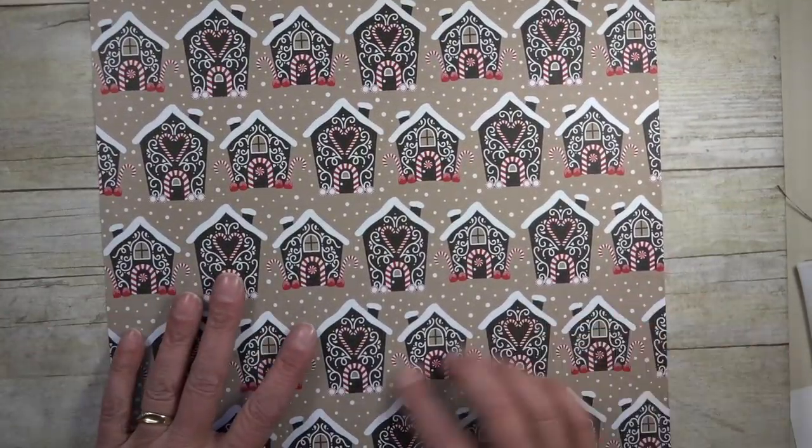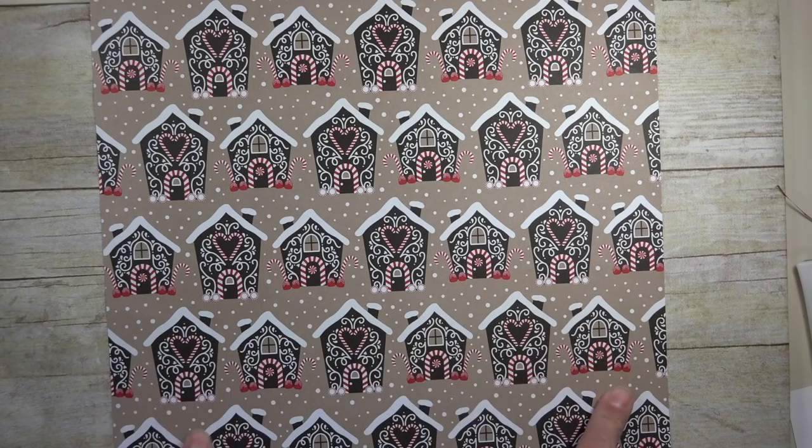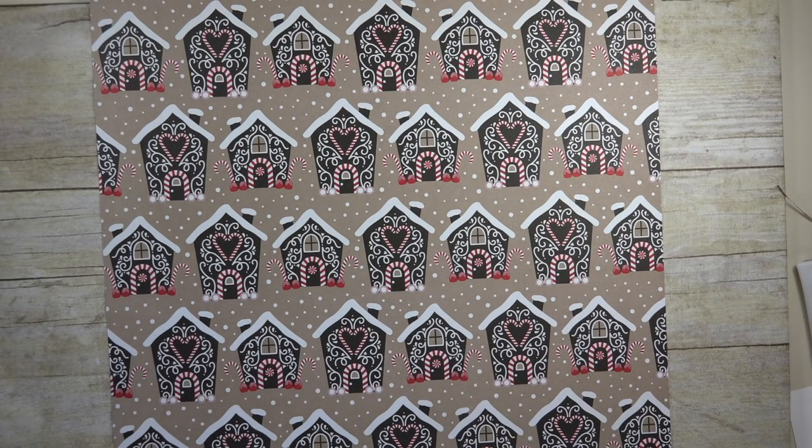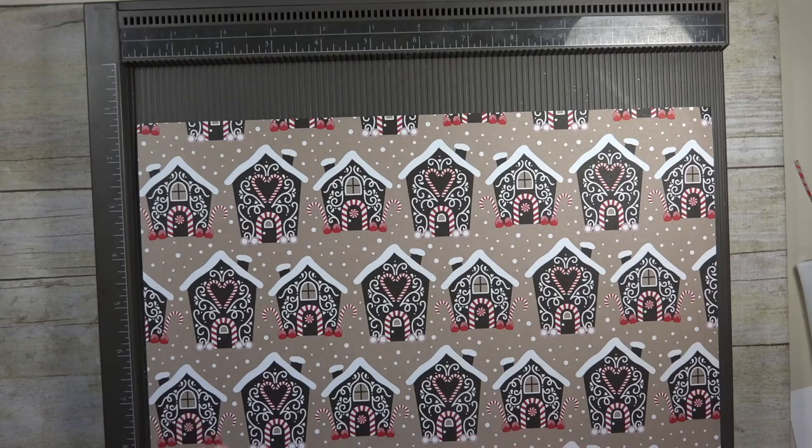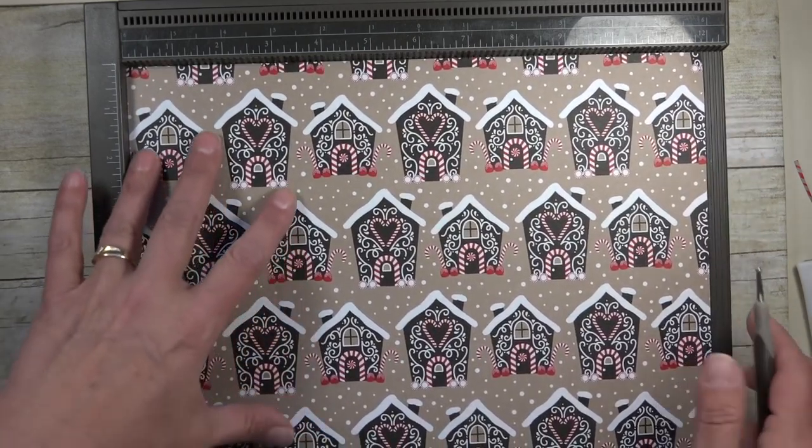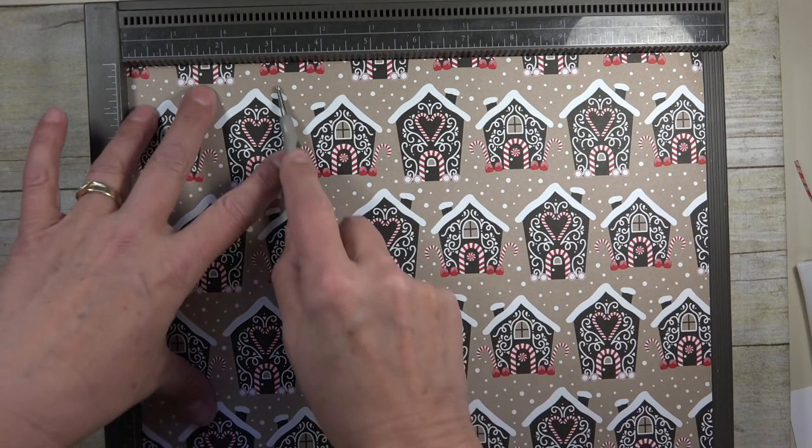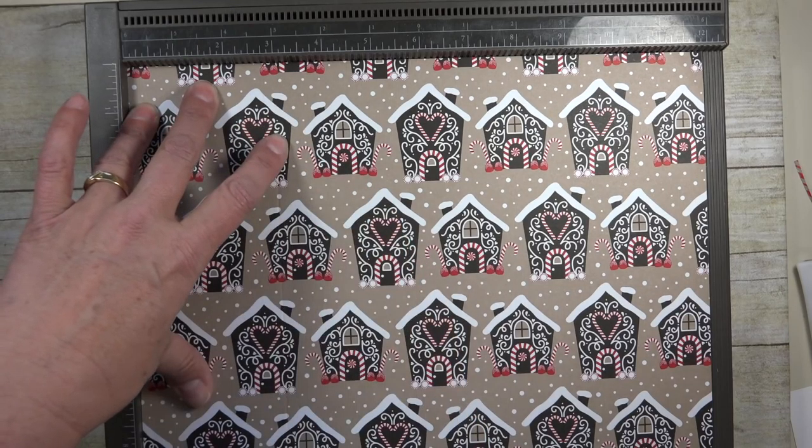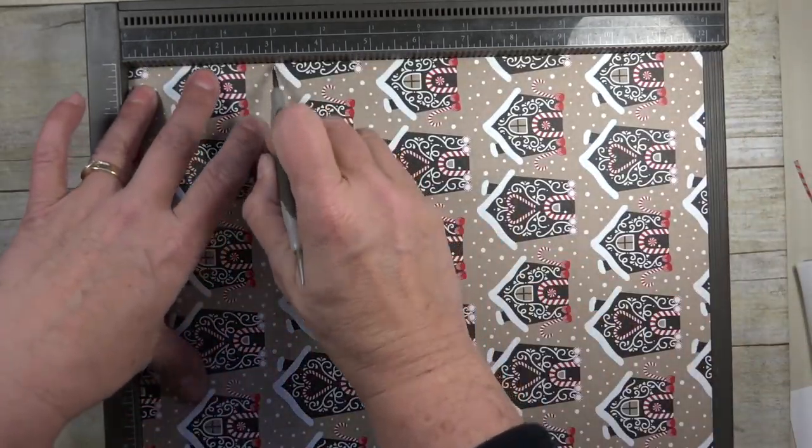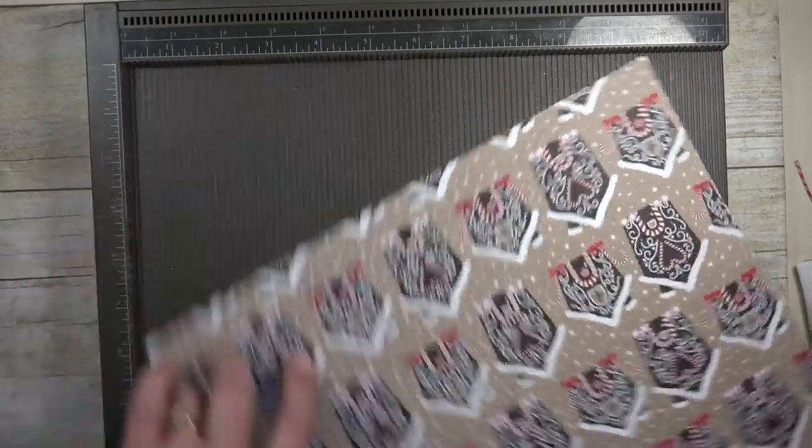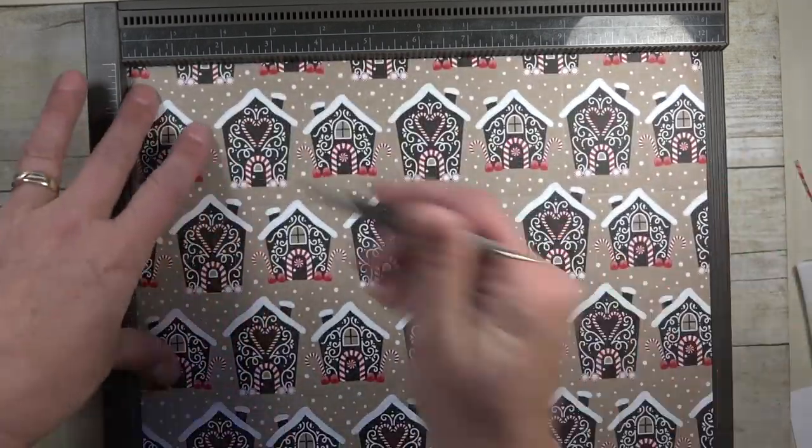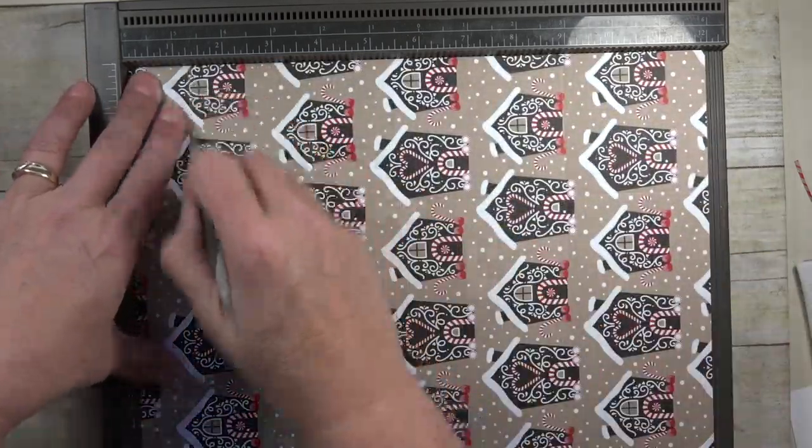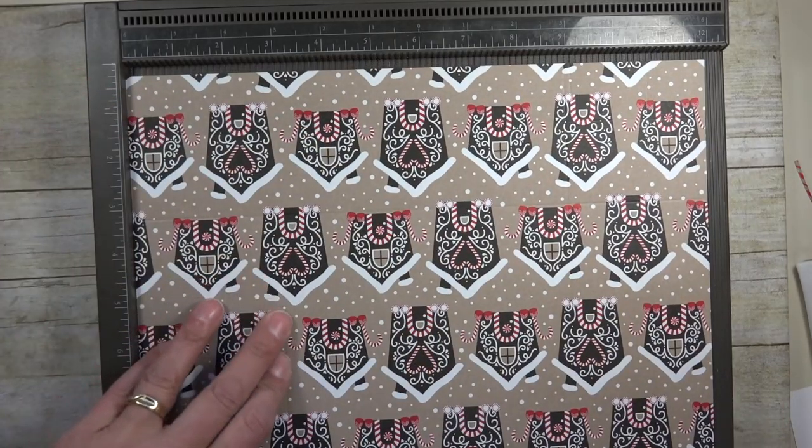I began with a piece of Designer Series Paper with all the gingerbread houses on it and my Simply Scored board. When I'm using my stylus with Designer Series Paper, because it's thinner than our cardstock, I tend to use the fatter end of the stylus and not press so hard because I don't want to punch a hole right through. I'm scoring this all the way around at three, and then I'm going to come in and score it at one and a quarter on all sides.